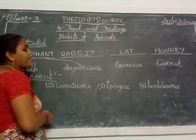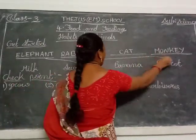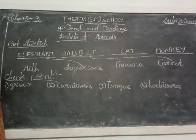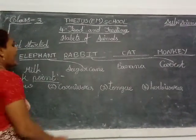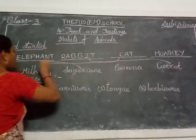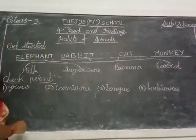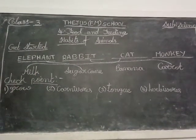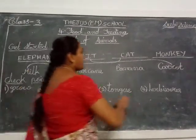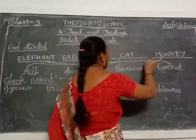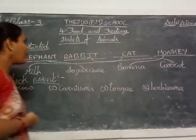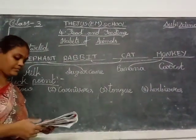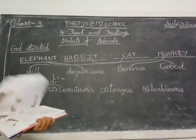Next, rabbit — which does it eat? Carrot. So rabbit with carrot. Next, cat with? Milk. Cat with the milk, children? Yes. Monkey eats the banana. So take your pencils and complete that matching.